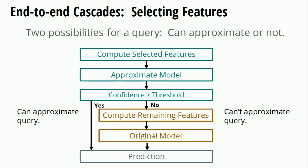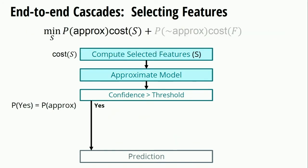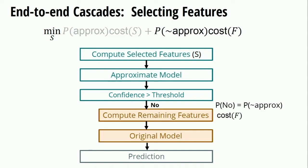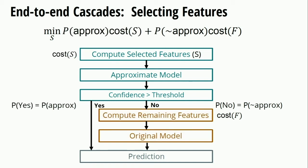So what is expected query time? When we conduct a query, one of two things can happen: either we approximate the query or we don't. If we do approximate, we only have to compute the selected features, so the first term in our expression for expected query time is the probability that we can approximate times the cost of computing selected features. If we don't approximate, we have to compute all features, so the second term is the probability that we don't approximate times the cost of computing all features. Summing these together gives a complete expression for expected query time.